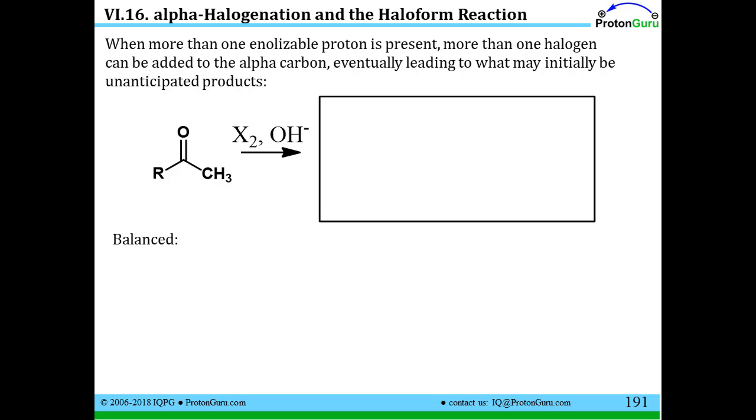If we do add a base and a halogen, well, the base is going to help us remove more than just the one H from the alpha position. In fact, the product we get when we do this reaction is actually a carboxylate. You'll notice that carbon is completely taken off of this ketone. How did that happen?